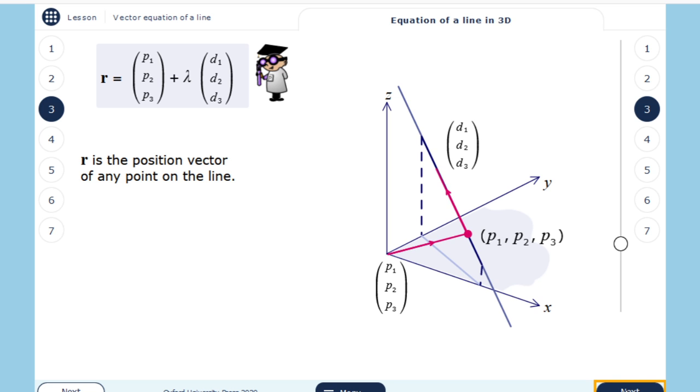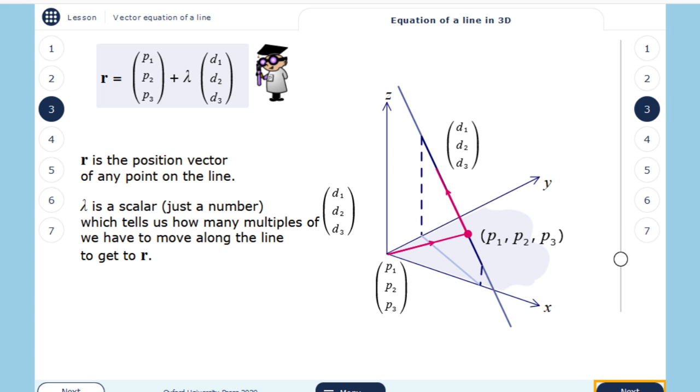R is the position vector of any point on the line. Lambda is the scalar, a number which tells us how many multiples of this vector d1, d2, d3 we have to move along the line to get R, another point.